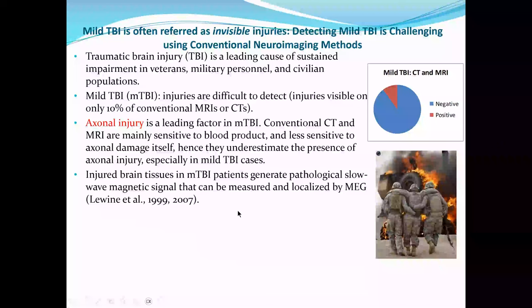The reason is that axonal injury is one of the leading causes of mild TBI. But conventional CT/MRI is mainly sensitive to blood products in the brain, and is less sensitive to axonal damage itself. So it is quite possible that they underestimate the presence of axonal injury, especially in mild TBI cases.